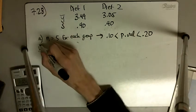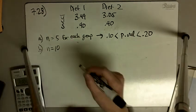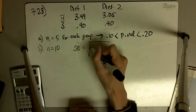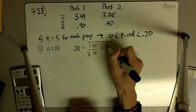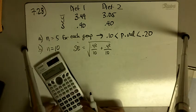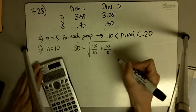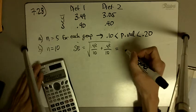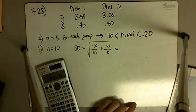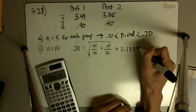Part B, similar thing, except now n is equal to 10. We've got 10 in each group. So here, our standard error is going to be 0.4 squared over 10 plus 0.4 squared over 10. And so now, we have a p-value, is that right, 0.17, 0.1789.